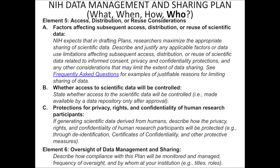Element five addresses access, distribution, and reuse considerations — ultimately the topic of data governance. The policy requires investigators to be explicit about how and who can access the data and under what terms data can be reused. Controls and protections for privacy of human research participants are part of this element. Data needs to be released in ways that are overseen and managed appropriately, so explicit descriptions of how that will occur need to be presented as part of the plan.